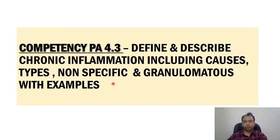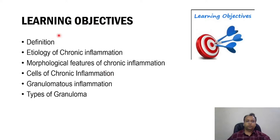We will see each of these subcategories and learning objectives one by one. The learning objectives are: definition of chronic inflammation, etiology of chronic inflammation, morphology, cells involved in chronic inflammation, granulomatous inflammation, and examples or types of various granuloma formations.